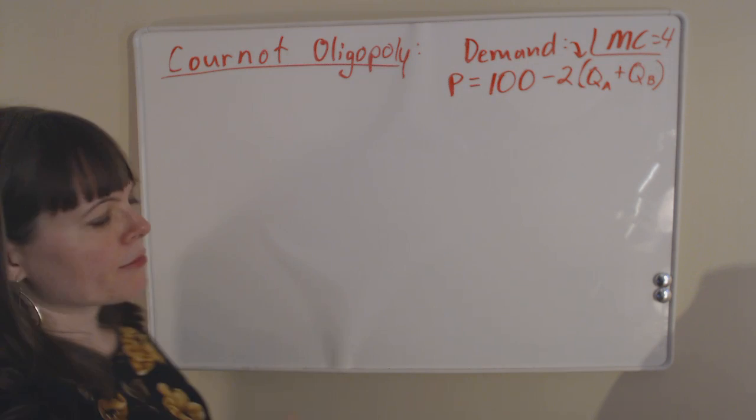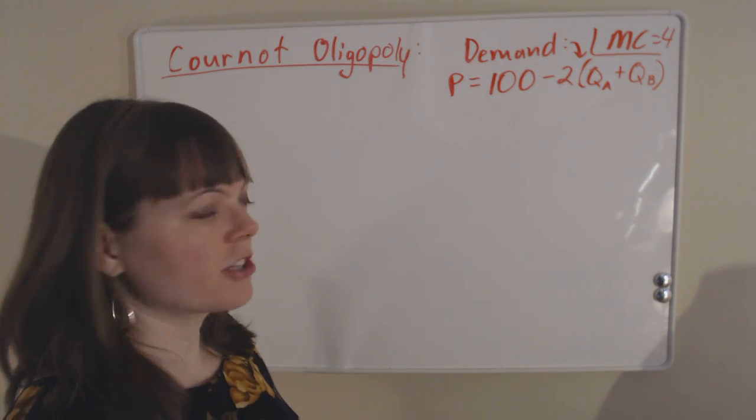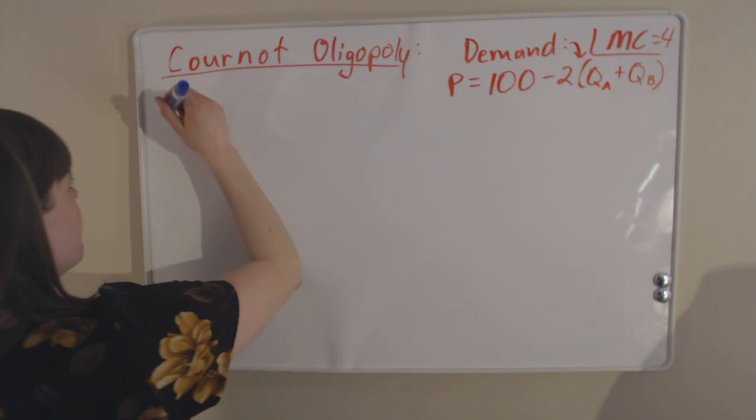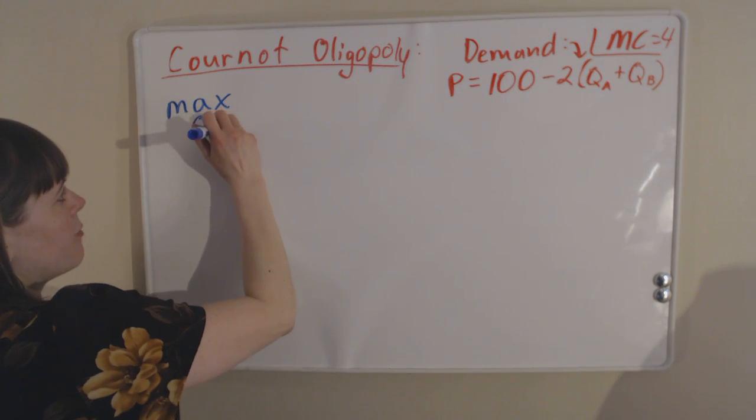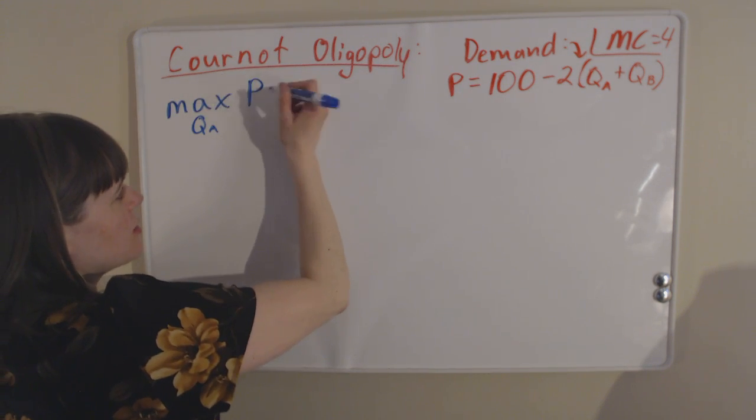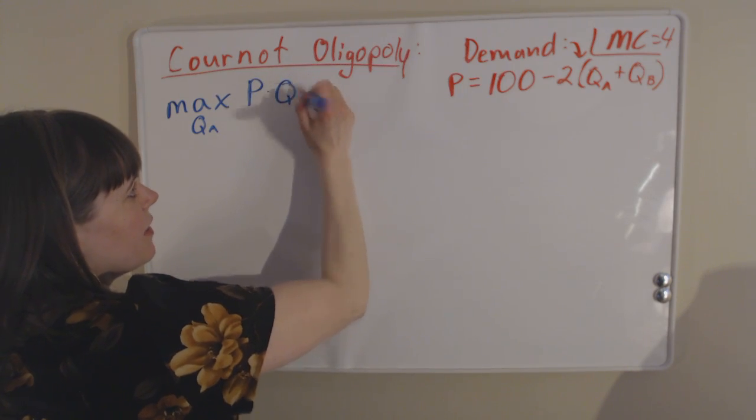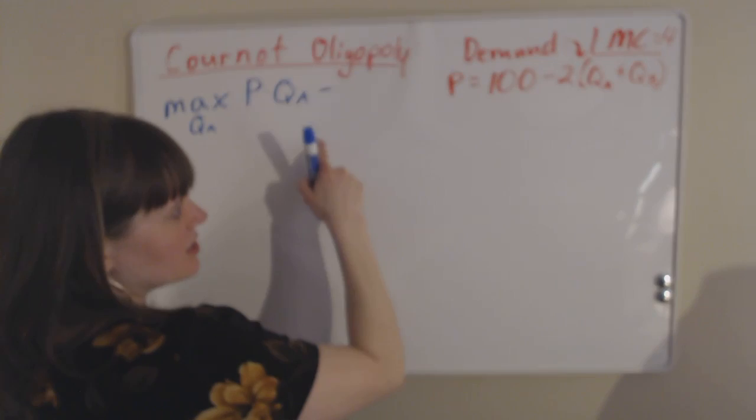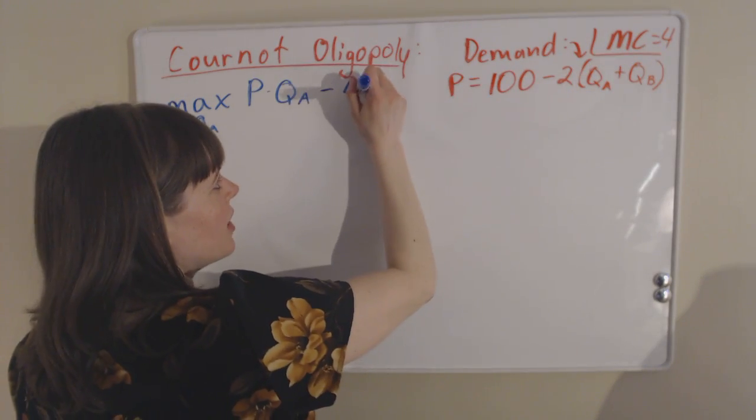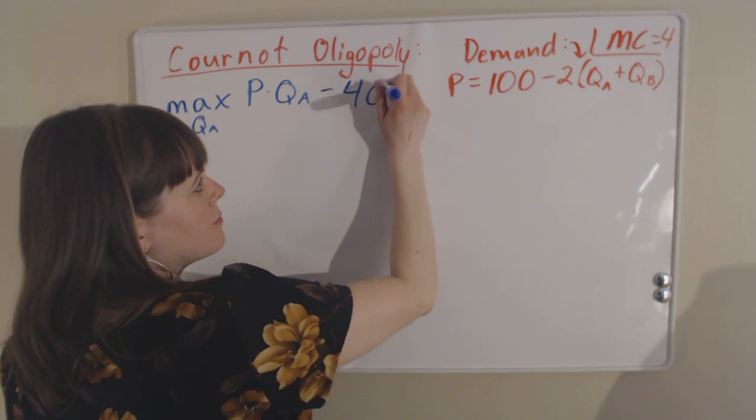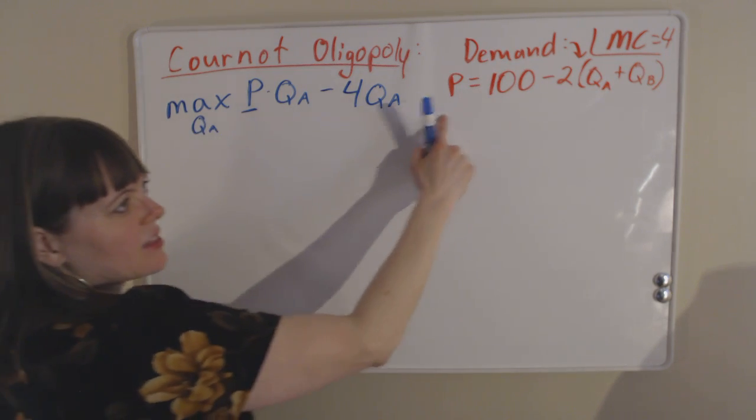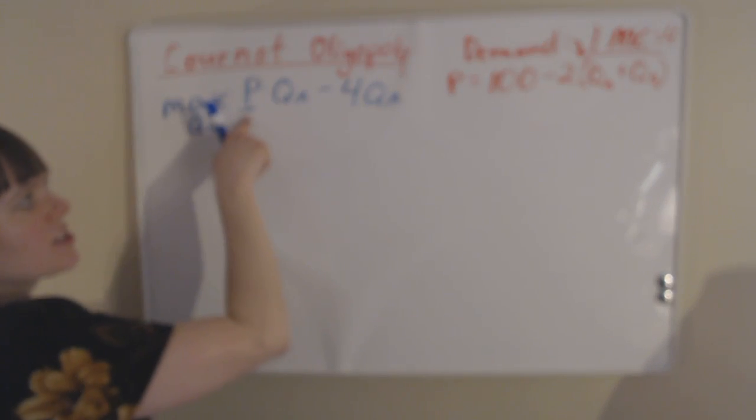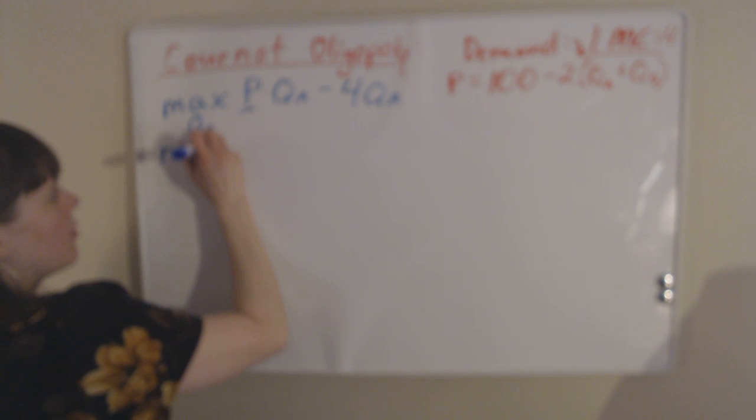To start this problem, it doesn't matter which firm's problem we set up first, whether it's firm B or firm A. Let's just start with firm A, and we're going to maximize their profit by choosing the quantity of firm A. Their profit is, of course, the market price times the quantity that they produce—that's their total revenue—minus their total costs, which are the $4 per unit marginal cost times the quantity of firm A. We're going to plug in the demand function into the price here to get rid of price so that this entire thing is in terms of quantity.